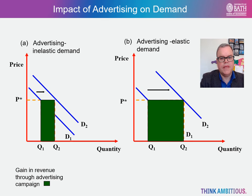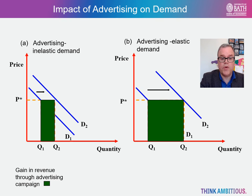We can see this in the diagram. In figure A on the left, advertising increases demand from D1 to D2 and total revenue — price times quantity sold — increases by the green shaded area. This figure depicts advertising expenditure as relatively inelastic with respect to demand. However, in figure B on the right, sales and sales revenue increase by more since advertising expenditures shift the demand curve further to the right, i.e. demand is more sensitive or elastic to advertising expenditure. The key point is that an advertising campaign will have more impact the greater the advertising elasticity of demand, i.e. the greater the extent to which the advertising campaign shifts the demand curve to the right.